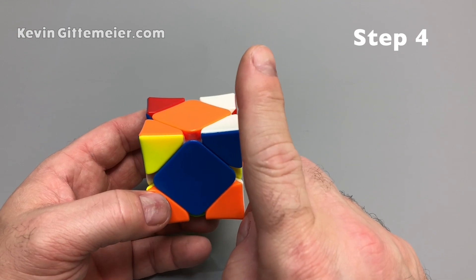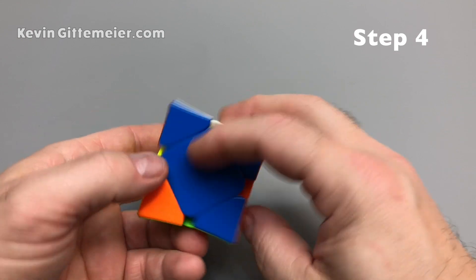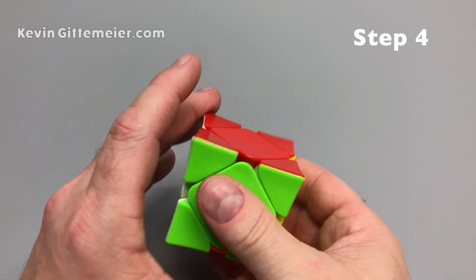And now when we do the sequence, we're going to move all the corners correct. Pull this center down to match this. Bam. And we solve the whole cube.